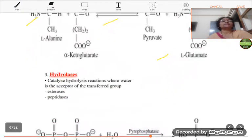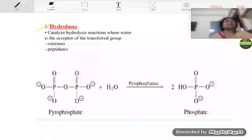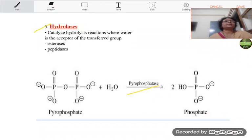The next class of the enzyme is the hydrolases which catalyze hydrolysis reactions where water is the acceptor of the transferred group. Examples are esterases, peptidases. One example is taken here in the form of pyrophosphatase enzyme. This enzyme is catalyzing here the hydrolysis of pyrophosphate into phosphate.